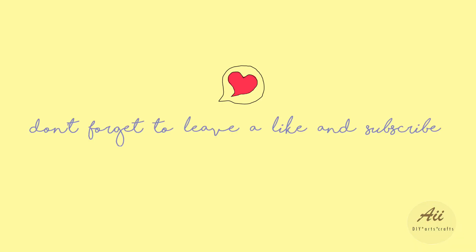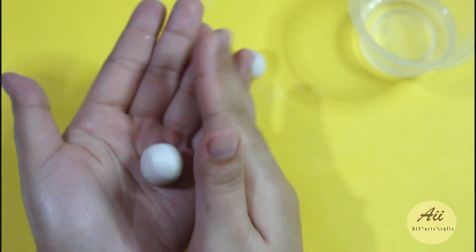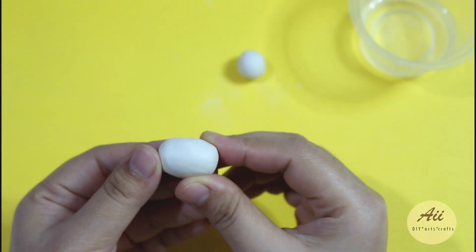Now let's start with the first kawaii cat. Make two pieces of clay into a ball, one bigger piece and a smaller one, maybe half the size of the bigger ball.